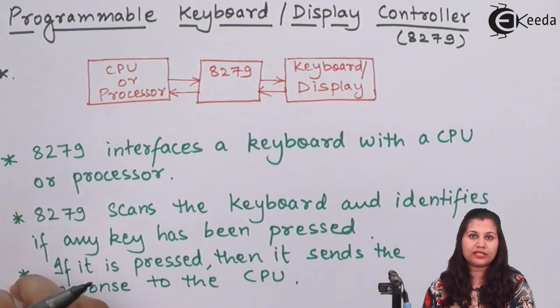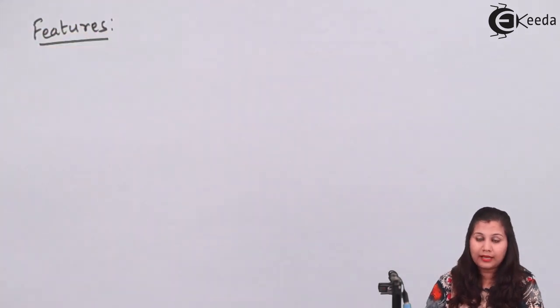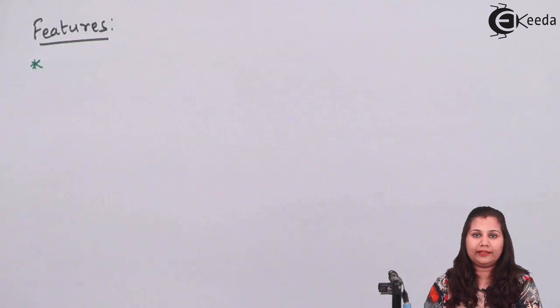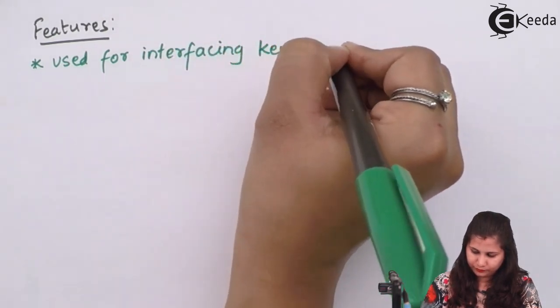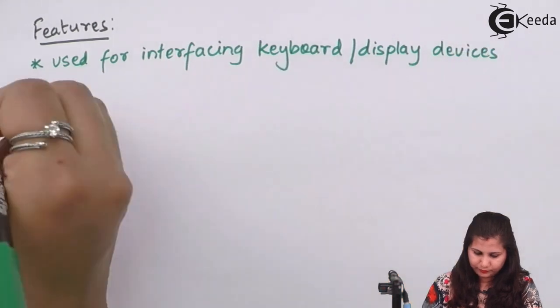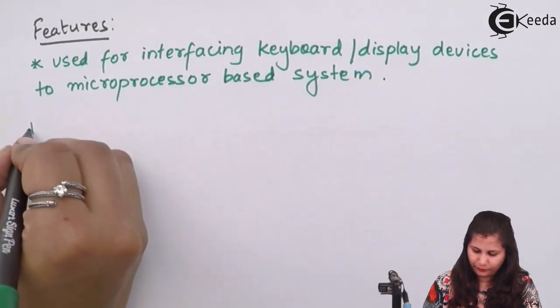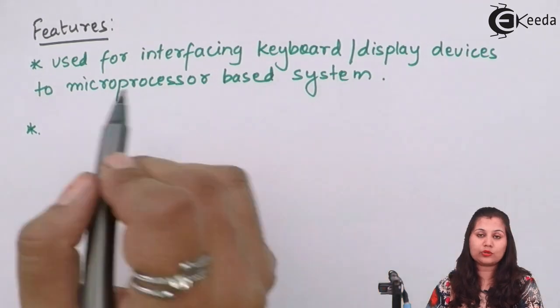Now let us study some of the features of the 8279 IC. As the name programmable keyboard display controller indicates, it is a controller used to interface the keyboard and the display devices to the CPU. It interfaces both the keyboard and display devices to microprocessor-based systems.